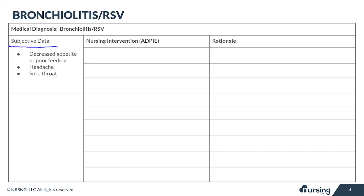For your subjective data, the most important thing to be aware of is that these patients are likely going to have a decreased appetite and they're going to be having poor feeding. This is especially true for infants — there are a lot of coryza symptoms here, so lots of runny noses. Just imagine trying to feed from a bottle when your nose is all blocked up. In your verbal patients, you may hear them complain of symptoms like headaches, sore throat, and even fatigue.